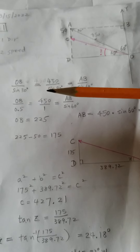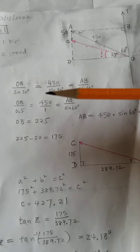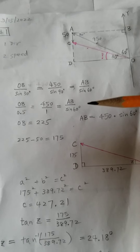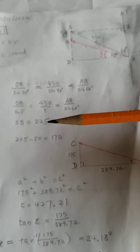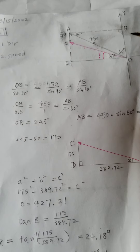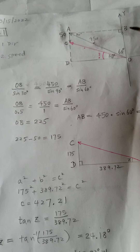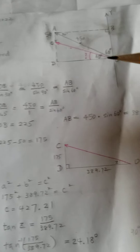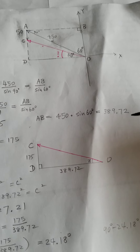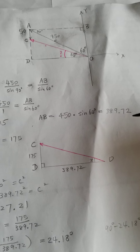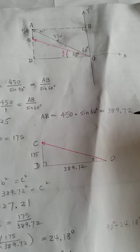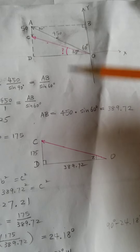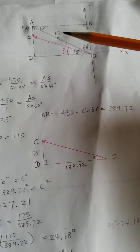So we cross multiply and solve it. OB is 225. That means this Y component is 225. And this other component is going to be 389.72. Just check yourselves — these values should be less than 450, which is the hypotenuse.